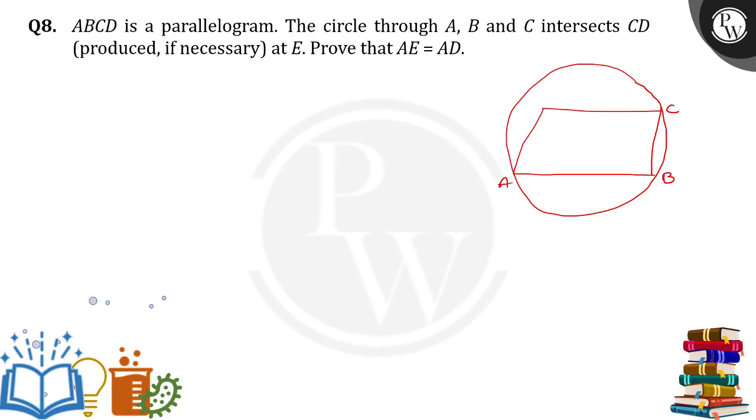Now we need to produce this D point to get the circle at E. Now join AE. So what we need to prove? AE is equal to AD. How can we do that?